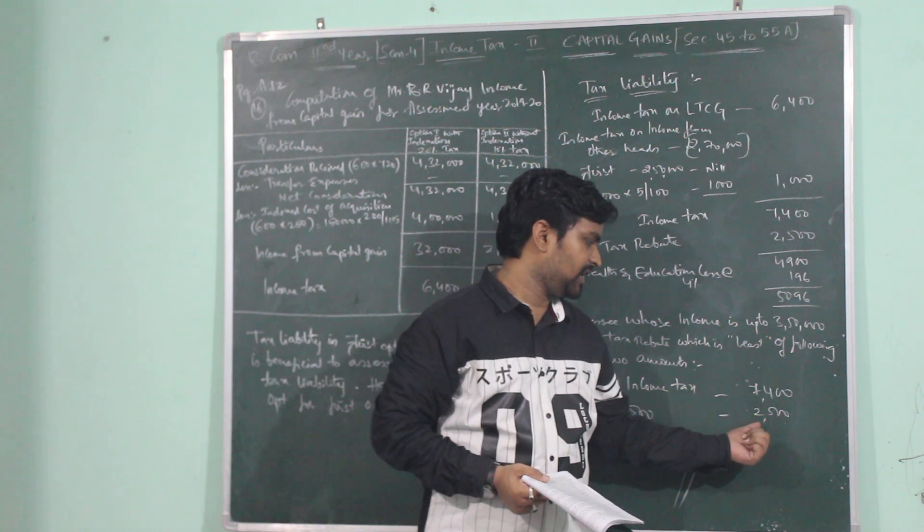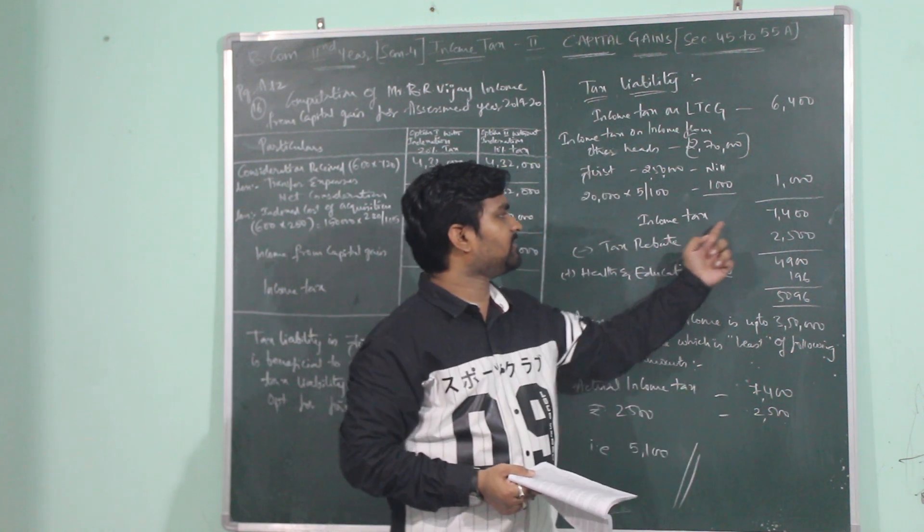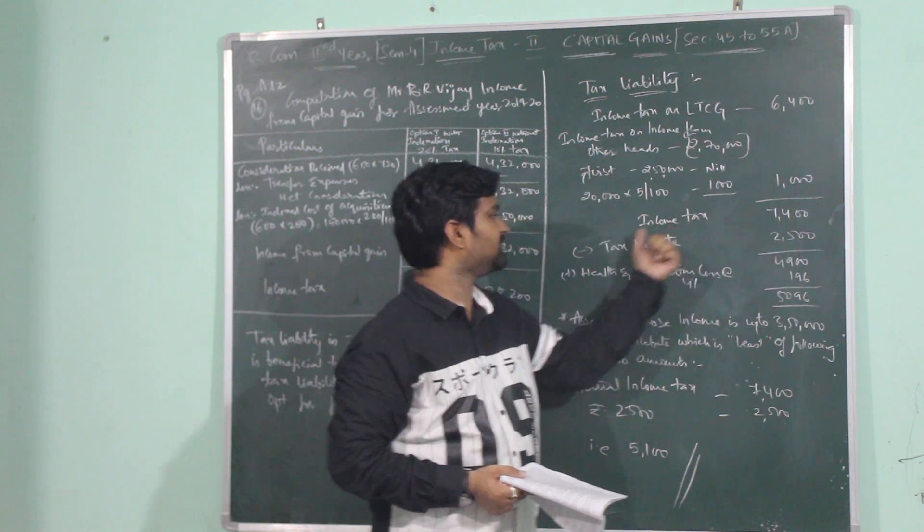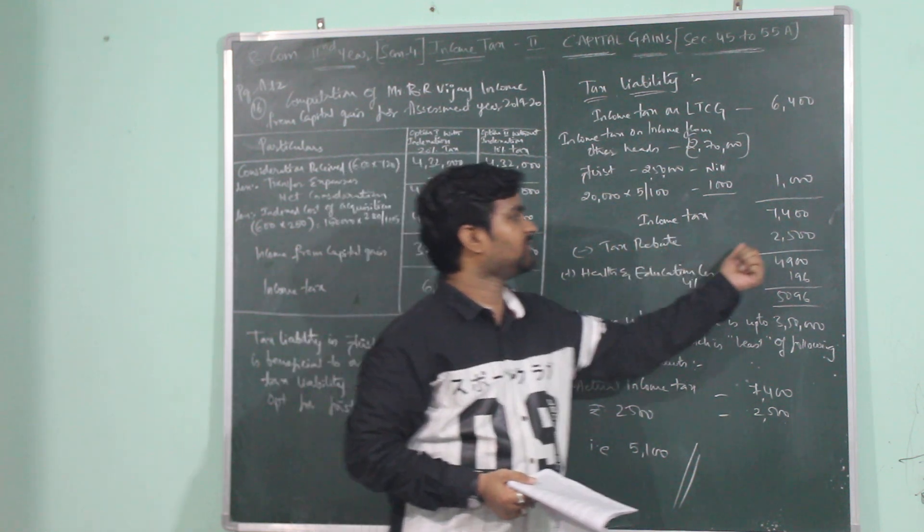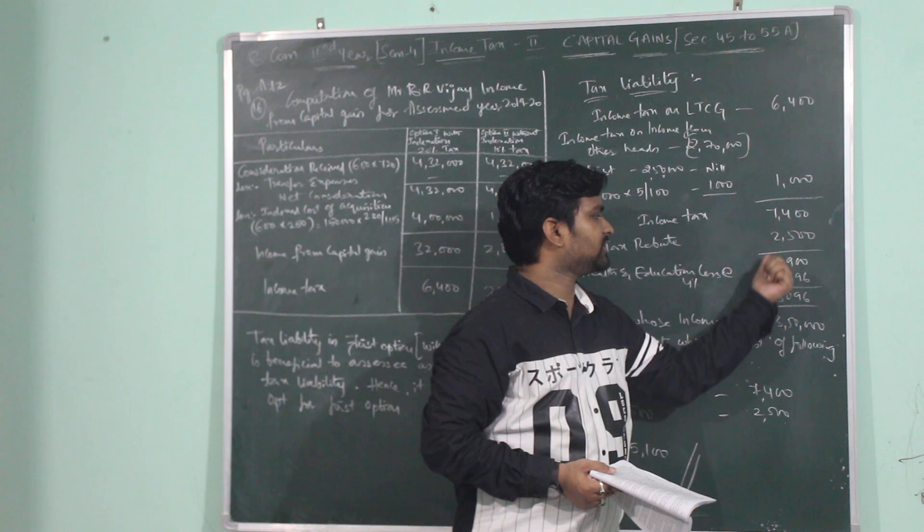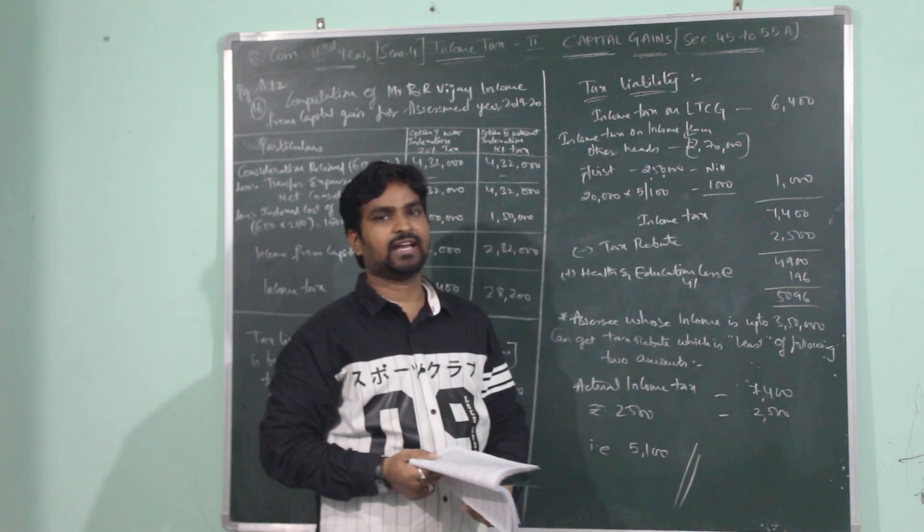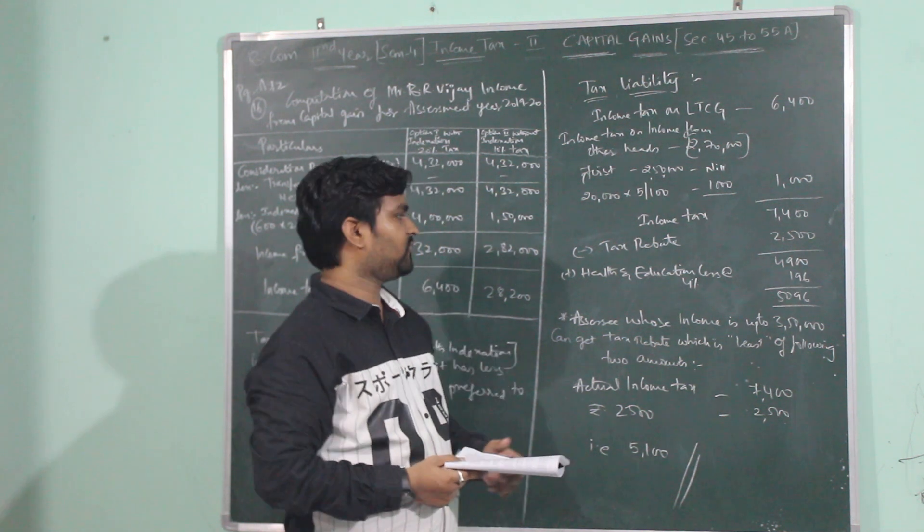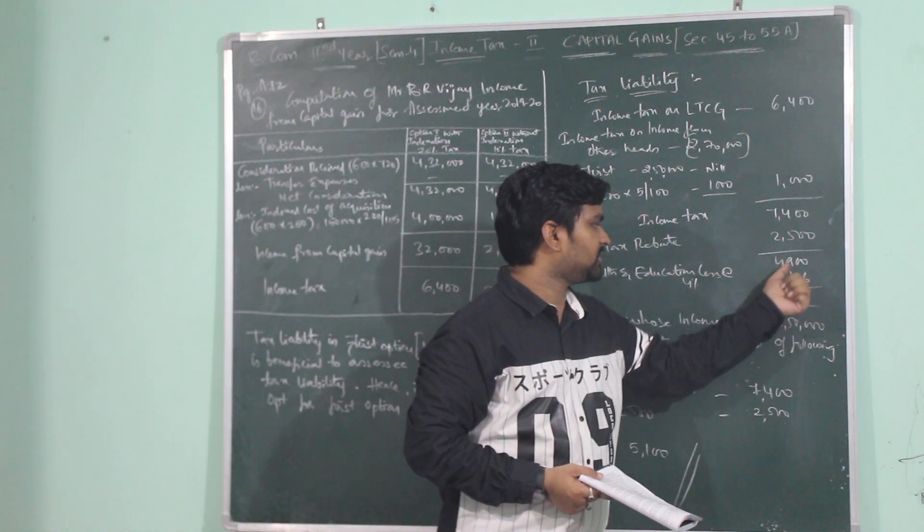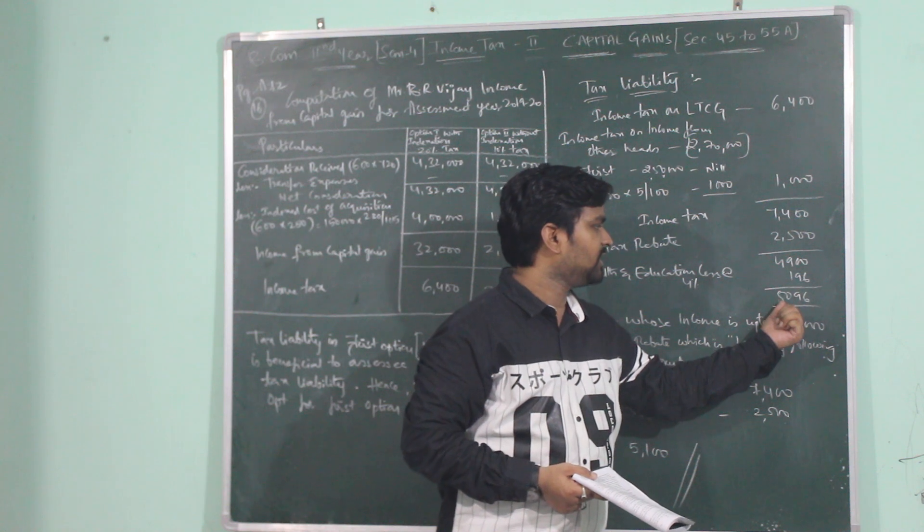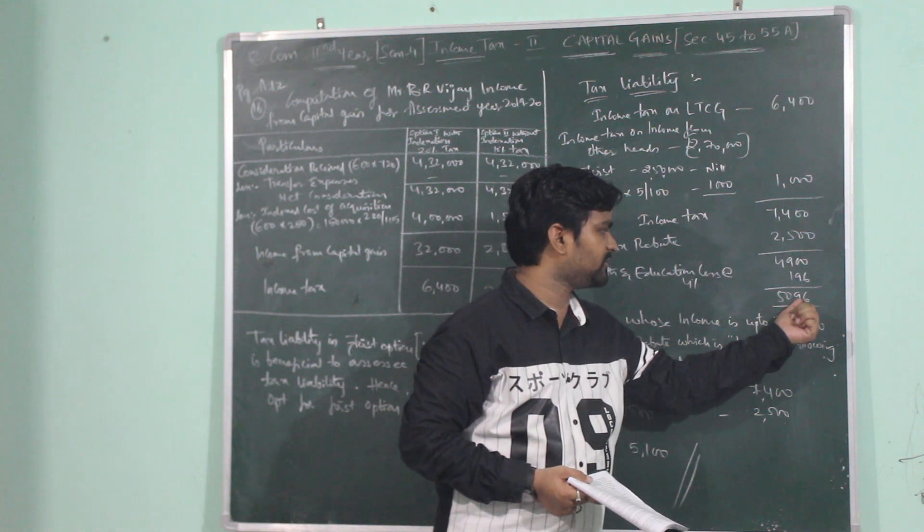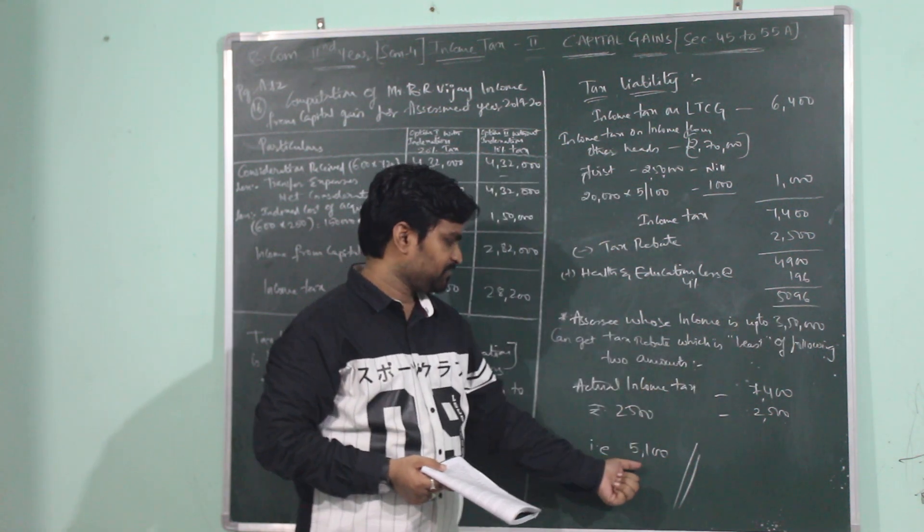This the assessor can avail as tax rebate. From income tax of 7,400, tax rebate of 2,500 will be subtracted, so income tax is 4,900. This will be added with health and education cess at the rate of 4%, which is 196. The total tax liability of the assessor is 5,096 rupees, which will be rounded off to 5,100.